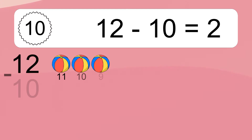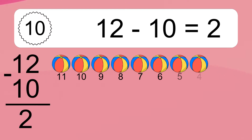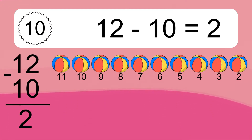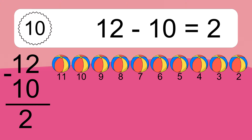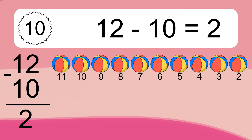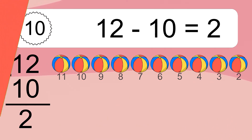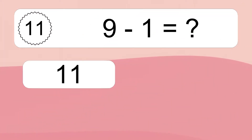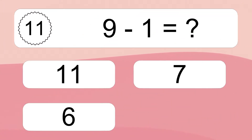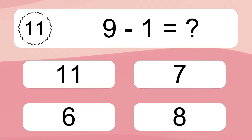12 minus 10 equals what? 12 minus 10 equals 2. Let's count it: 11, 10, 9, 8, 7, 6, 5, 4, 3, 2.